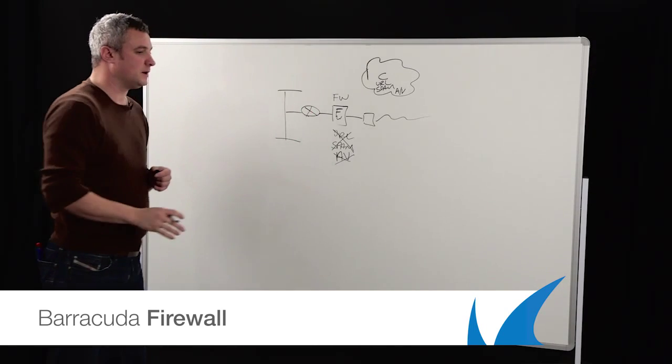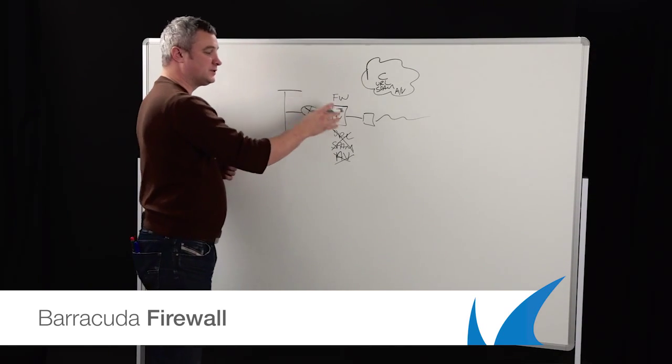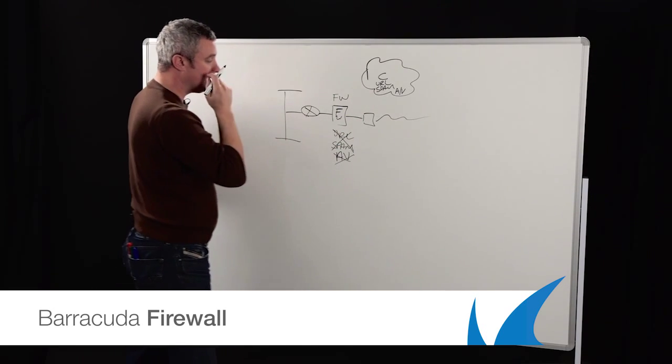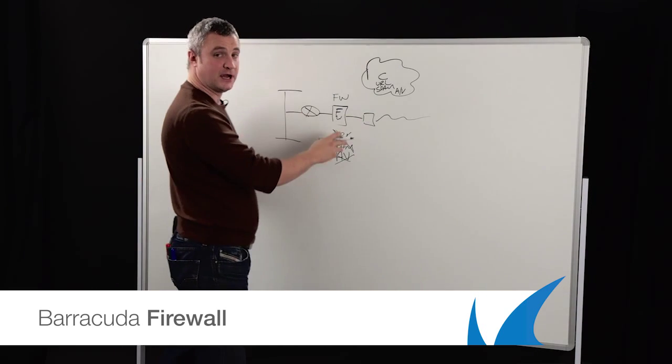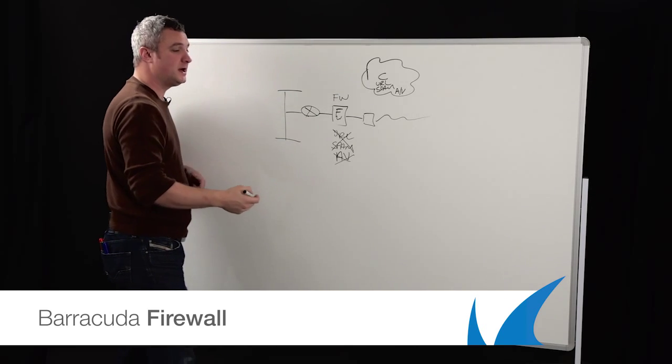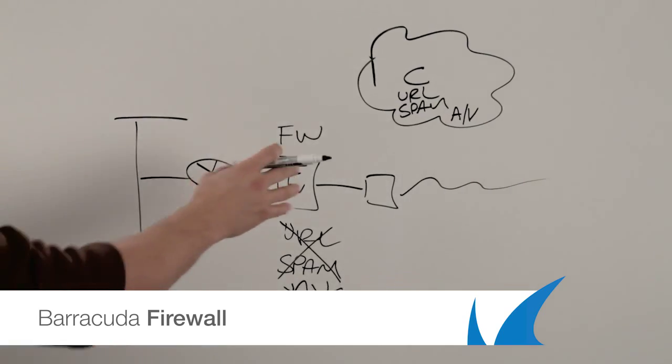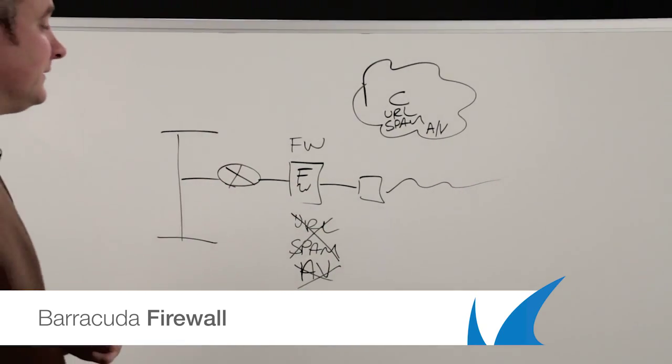What this also means in the Barracuda firewall is the firewall is a true next generation firewall for the masses. It's still got the ability to do next generation features. It's application aware. It's detecting what's going through. It's giving prioritization of traffic. This means the key features of the firewall are not being taken down by using other content filtering features.